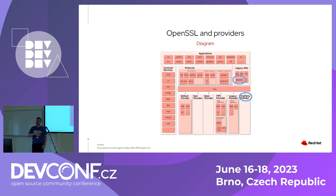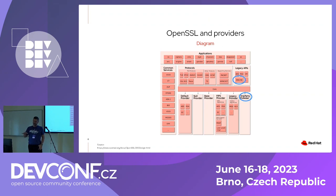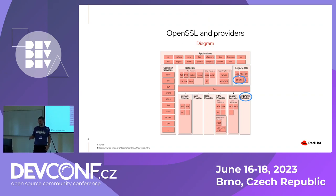This diagram from the OpenSSL 3.0 design shows the difference in where things live. The engine is a legacy thing with its own world around it, while the provider lives really below the core of the library — very low level. All providers are on the same level, whereas the engine was special. That's why a provider can be used somewhat transparently, while engines really had to be coded for specifically.